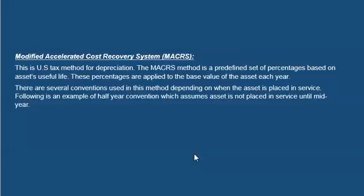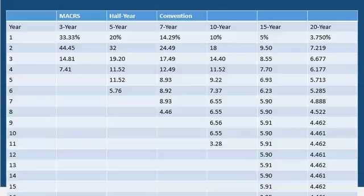The Modified Accelerated Cost Recovery System, MACRS, is the US tax method for depreciation. The MACRS method uses a predefined set of percentages based on the asset's useful life. These percentages are applied to the base value of the asset each year. There are several conventions used depending on when the asset is placed in service. The half-year convention assumes the asset is not placed in service until mid-year. Under this convention, assets can be depreciated over 3, 5, 7, 10, 15, or 20 years.